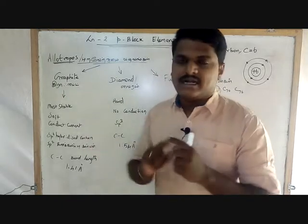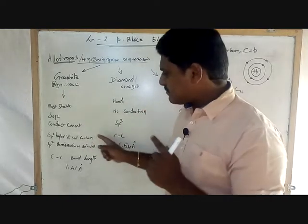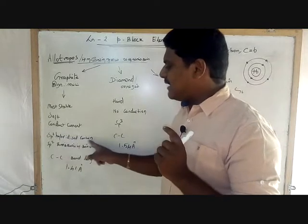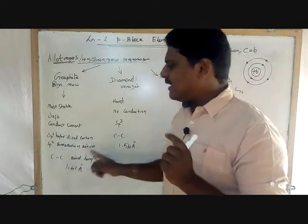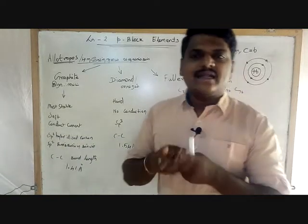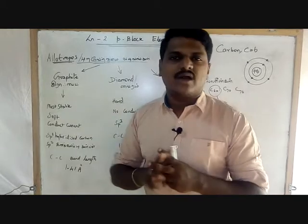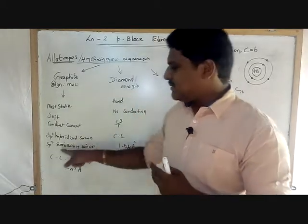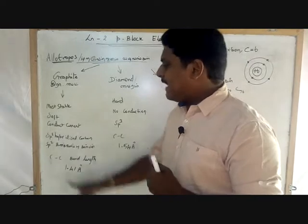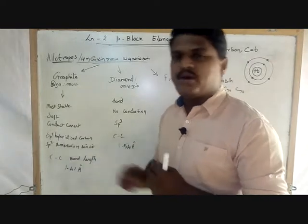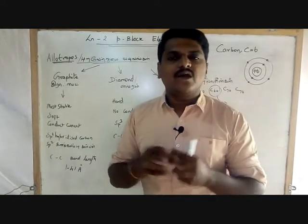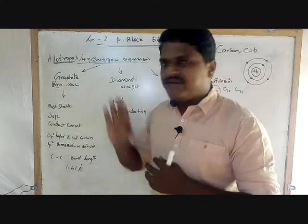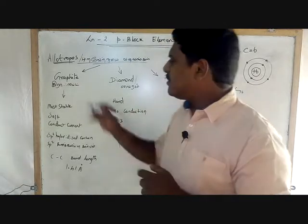Graphite conducts current — it is used in batteries and contains conducting power. Graphite is SP2 hybridized carbon.